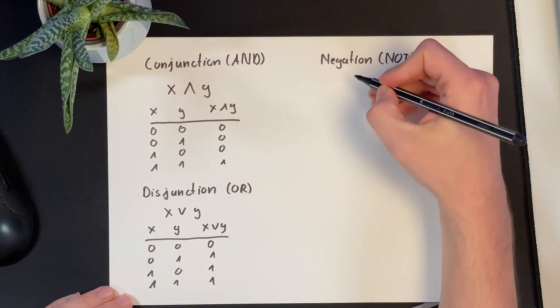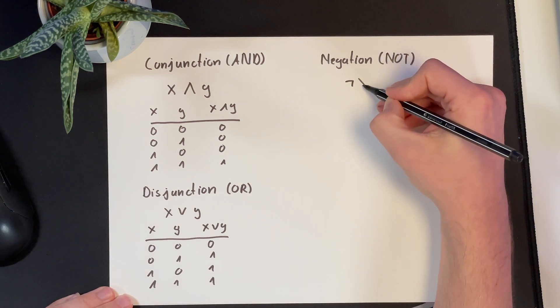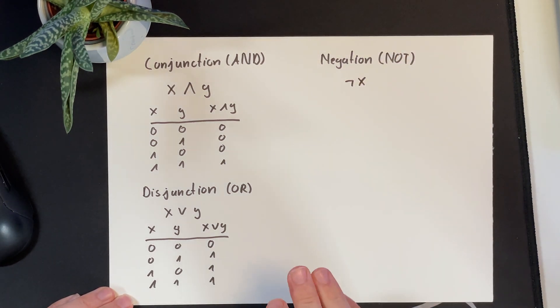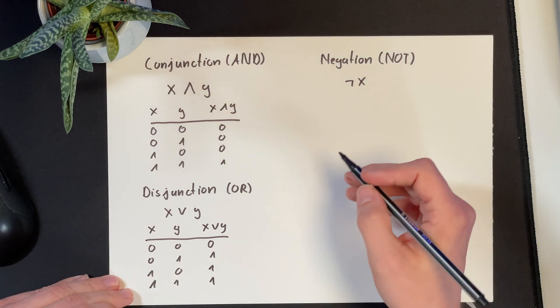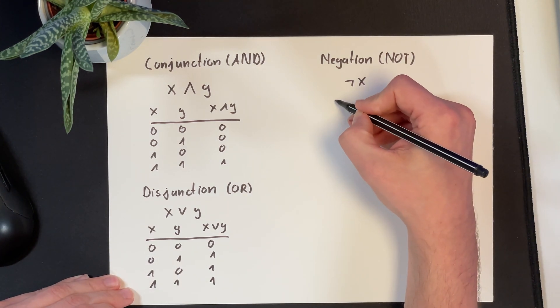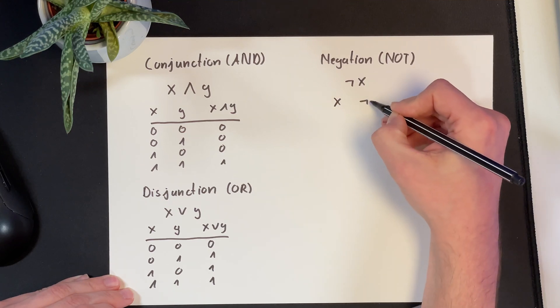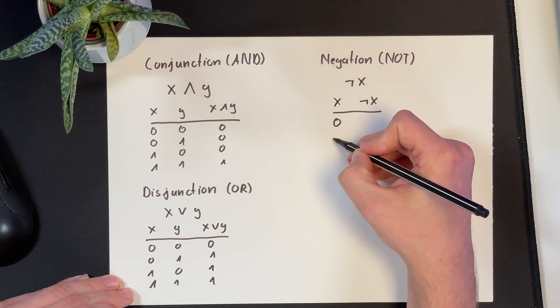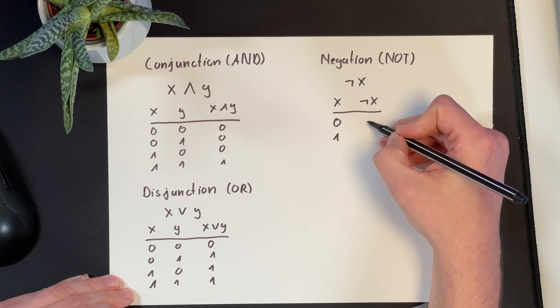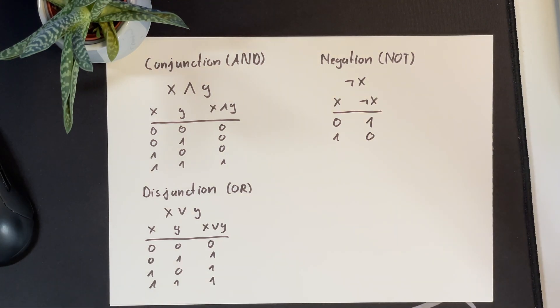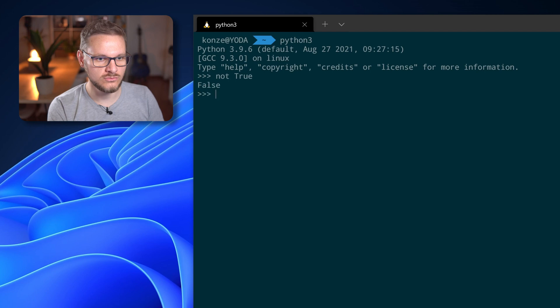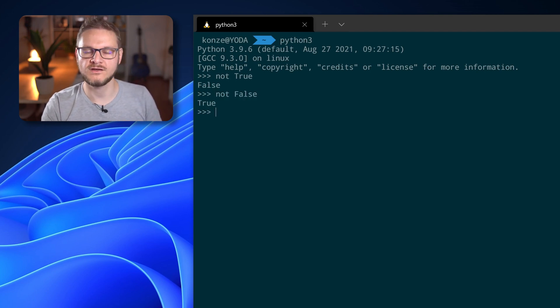The last basic Boolean operation is the negation. The negation takes one Boolean expression and applies the NOT operator. NOT will turn a 0 into a 1 and a 1 into a 0. In Python, NOT True gives False and NOT False gives True.